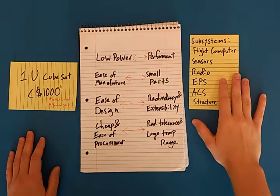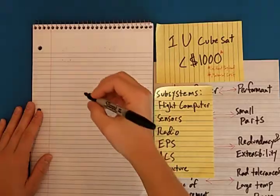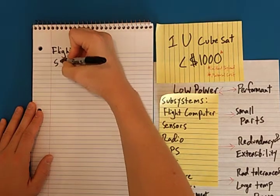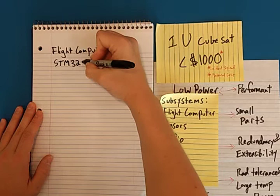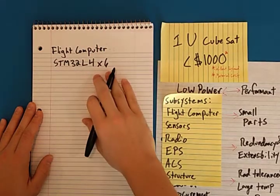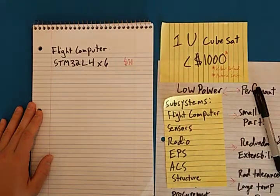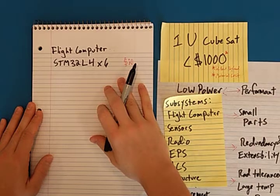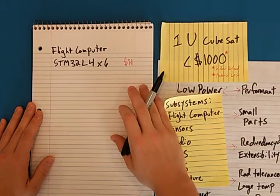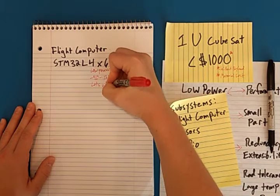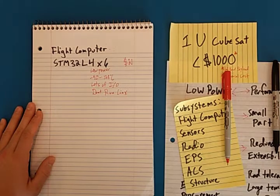So without further ado, let's get into the subsystems and how much I've budgeted per subsystem. Let's start with the first subsystem, the flight computer. I'm targeting an STM32 L4, L4X6 product line of microcontroller, roughly $20 a piece. Excellent low power performance. You can run them around a couple milliwatts. You can get them in wide temperature ranges. They come with lots of IO. You can run them either as a real time operating system or you can do bare metal.